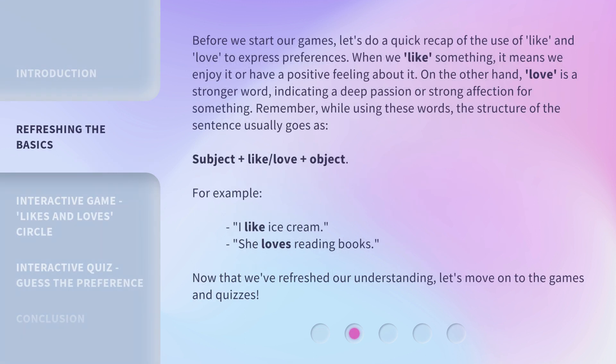Before we start our games, let's do a quick recap of the use of 'like' and 'love' to express preferences. When we like something, it means we enjoy it or have a positive feeling about it. On the other hand, 'love' is a stronger word, indicating a deep passion or strong affection for something. Remember, the structure of the sentence usually goes as: subject plus like or love plus object. For example, 'I like ice cream.' 'She loves reading books.' Now that we've refreshed our understanding, let's move on to the games and quizzes.